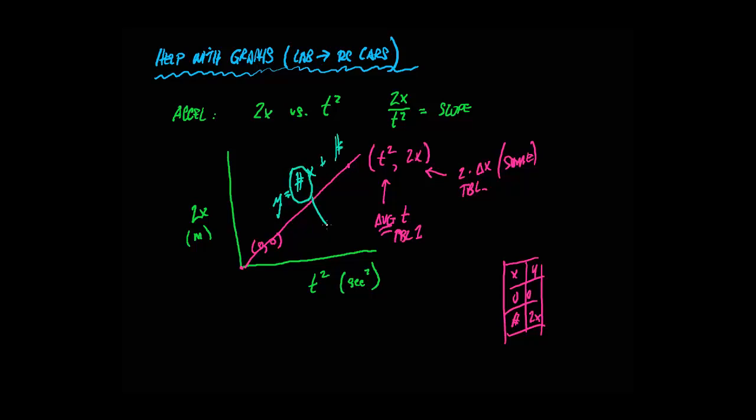This is the slope of the line, which is going to go into, I want to say table 4 or 5. I think it's table 5, where you're comparing the average acceleration versus that. So hopefully that helps you with the first graph.